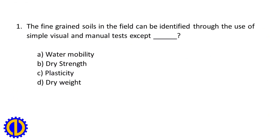Question 1. The fine grain soils in the field can be identified through the use of simple visual and manual tests, except: A. Water mobility. B. Dry strength. C. Plasticity. D. Dry weight.